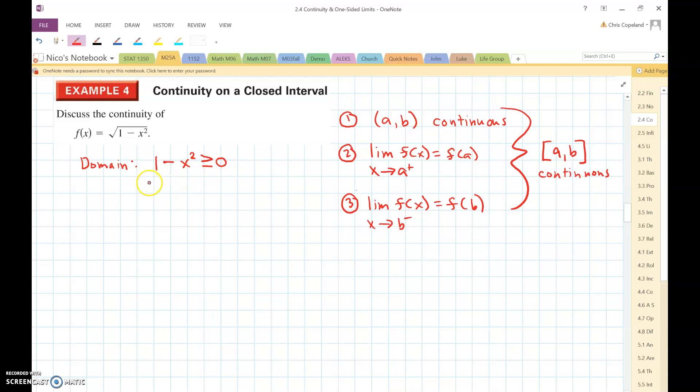So if I subtract one and multiply by negative one, I would get x squared is less than or equal to one.